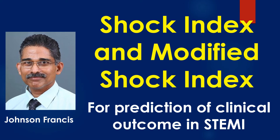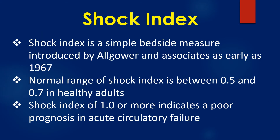Shock index is the ratio of heart rate to systolic blood pressure, which allows rapid bedside risk stratification. Modified shock index is the ratio of heart rate to mean arterial pressure. Shock index is a simple bedside measure introduced by Algover and Associates as early as 1967.